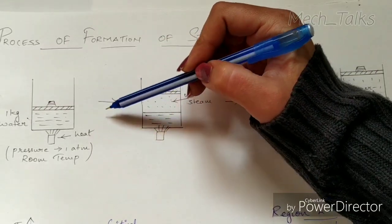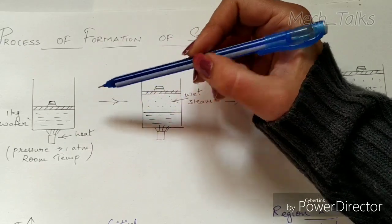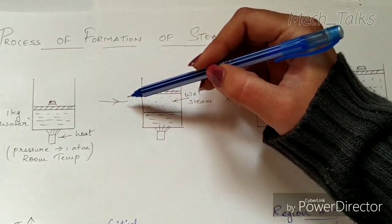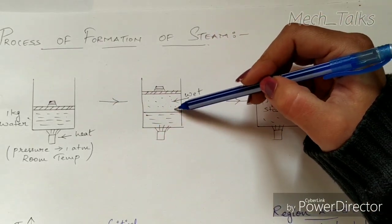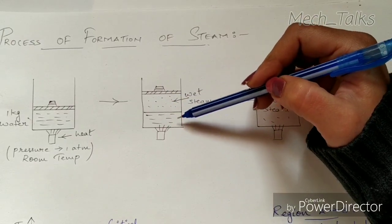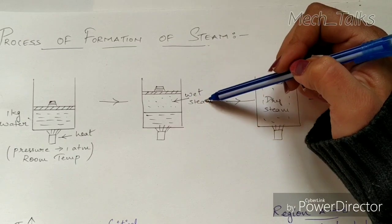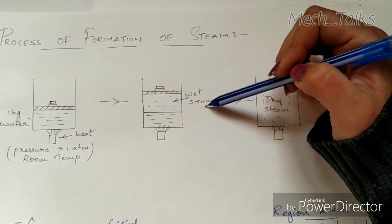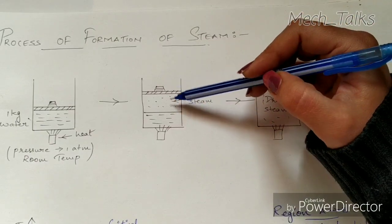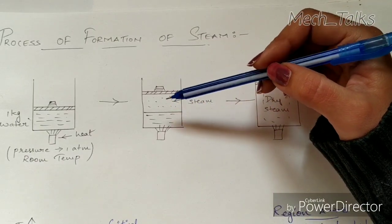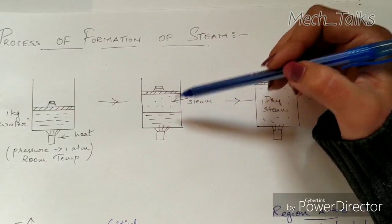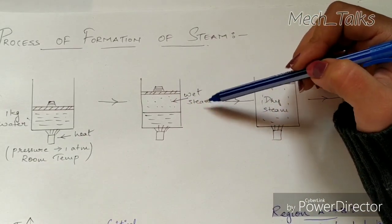On reaching 100 degree centigrade temperature, the first molecule of steam starts forming. Slowly, as time progresses, a particular quantity of water converts into steam, so we have both quantities of steam as well as water. This steam — wet steam — contains some moisture particles; it is not completely dry. Hence we term this type of steam as wet steam.